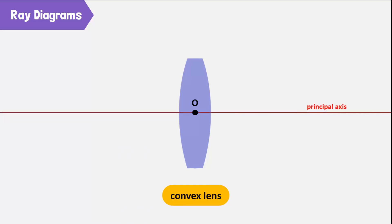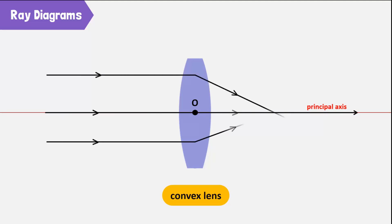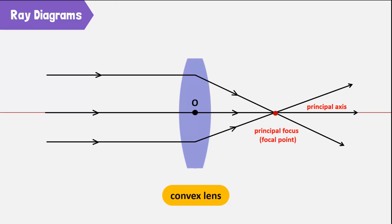The horizontal line passing through the optical center is the principal axis. When the rays of light traveling parallel to the principal axis pass through a convex lens, they converge at a single point on the principal axis. This point is called the principal focus, denoted by a capital F. The distance between the center of the lens and the focal point is called the focal length, denoted by a small f.